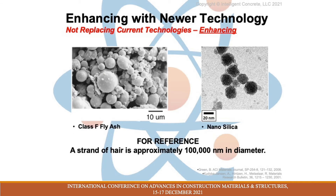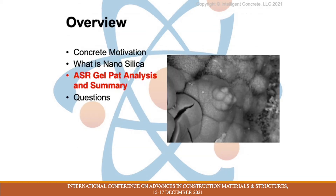Putting it under the microscope and comparing it to one of those mature technologies — Class F fly ash — which is also a pozzolanic material comparable to nanosilica. These two supplementary cementitious materials share a spherical shape, but that's where their similarities end. Nanosilica is a thousand times smaller, and on the chemical side it's 98 percent purity, much more pure than the Class F fly ash or micro silica we are used to. For reference, a human hair is around 100 to 150,000 nanometers in diameter, so that gives you an idea of what we're dealing with here in solution.